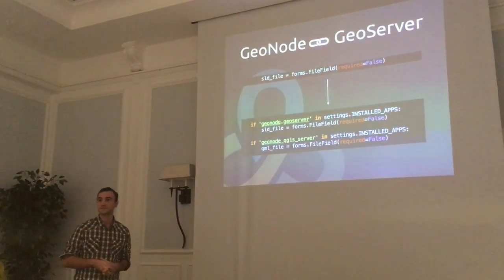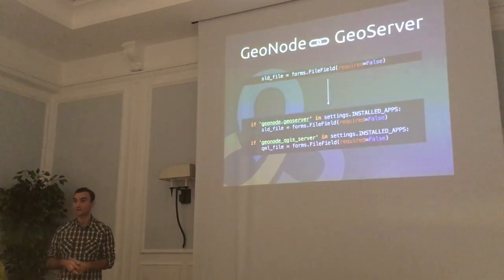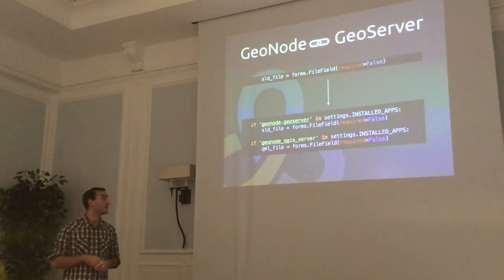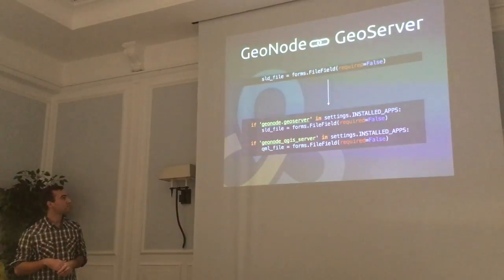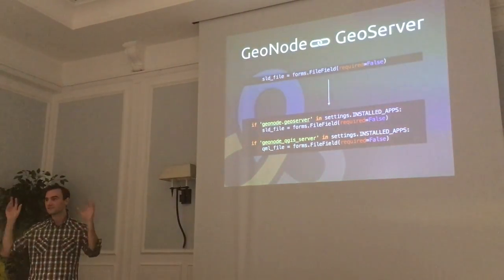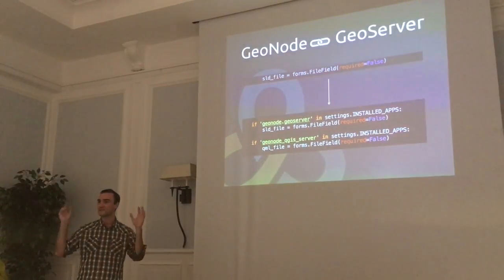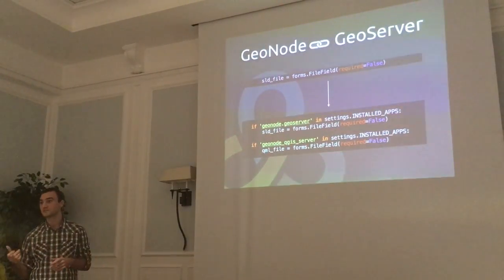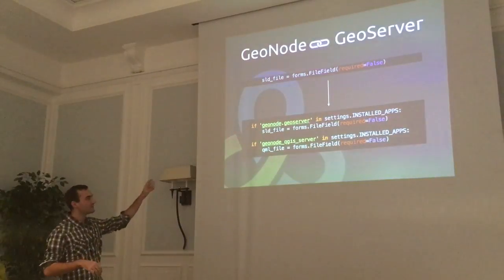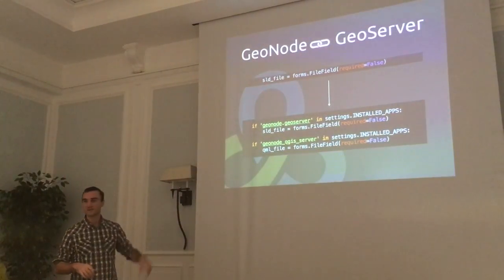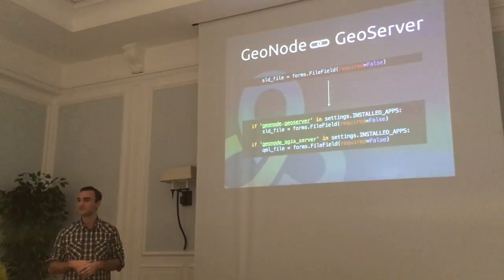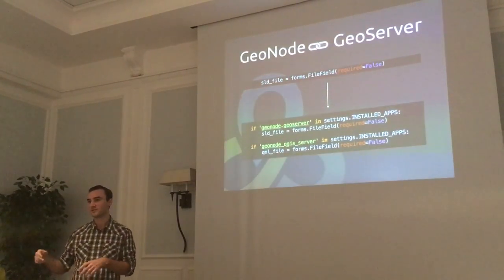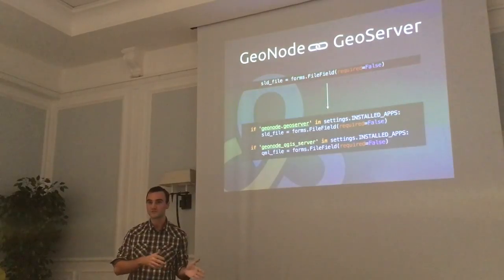There is another problem: GeoNode is very tightly linked to GeoServer. The original GeoNode code was written assuming GeoServer, and when we introduced our QGIS server backend we had to add hacks — if statements to check whether GeoNode is running with GeoServer or QGIS server. This is not very clean code. We would like to improve this and have a better separation between GeoNode and the backend, whether QGIS server or GeoServer.